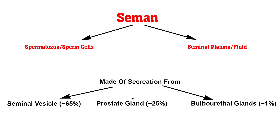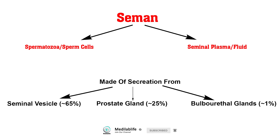The seminal plasma consists of secretions from the seminal vesicles, the prostate, and the bulbo-urethral glands. Among the many sugars, amino acids, enzymes, and minerals present in the seminal fluid, the most noteworthy and major energy source for sperm cells is fructose.